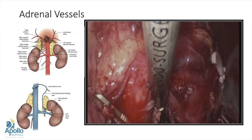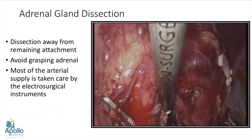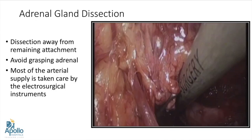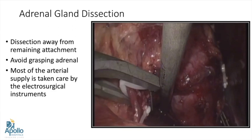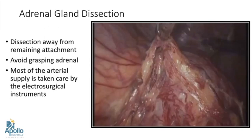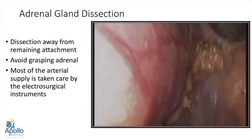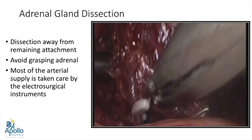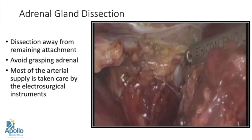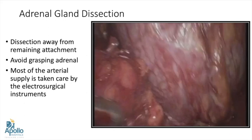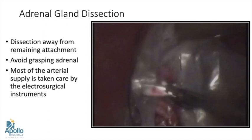Once that is done, the last part of the adrenal surgery is adrenal gland dissection. The gland is dissected away from all its attachments. Any vessels present are either clipped or managed with harmonic. We should always avoid grasping the adrenal gland because many adrenal tumors — especially myelolipomas — are very friable and there is a risk of entering the gland. Most of the arterial supply can be taken care of by the electrosurgical instrument. The lateral attachments of the gland can be removed and the gland freed all around. Most of the time you don't need any drain in adrenal surgery. There is no bleeding and the specimen can be bagged and removed.